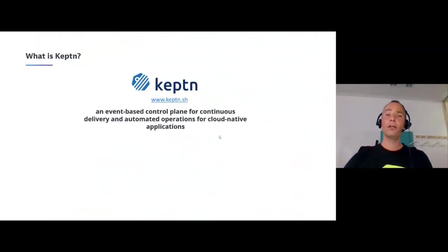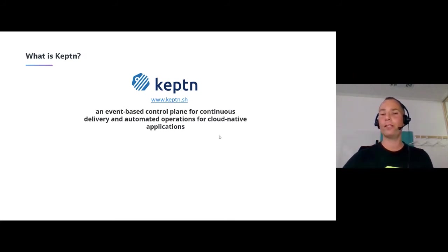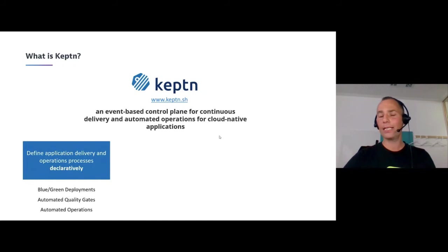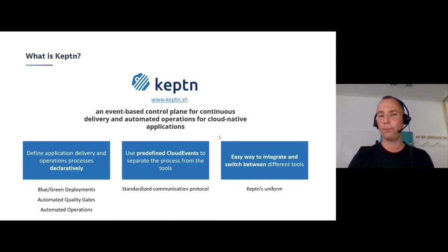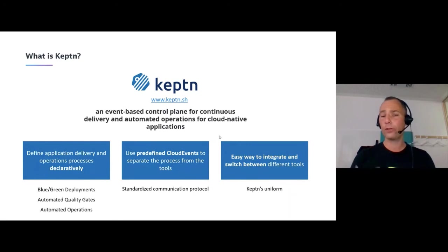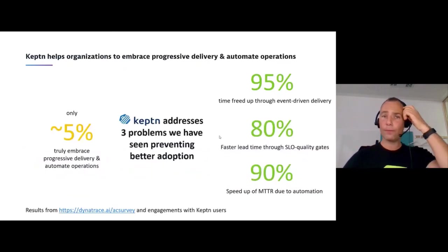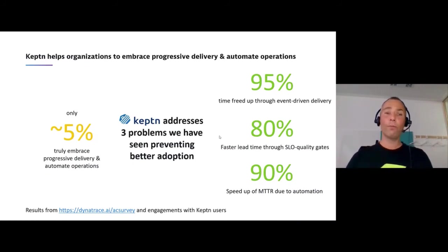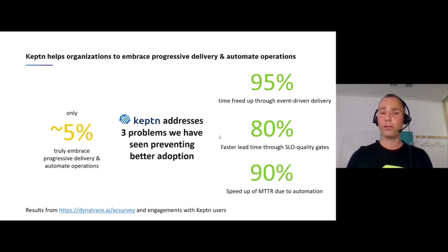To wrap up — Keptn is an event-based control plane for continuous delivery and automated operations. It manages these two processes and while it says 'for cloud-native applications,' it can really handle anything because it's event-driven and can call any type of tooling. Everything is based on standard protocols and standard tools, making it very easy to build your own services or replace and add tools. These are the three key problems we've highlighted today that we're trying to solve.